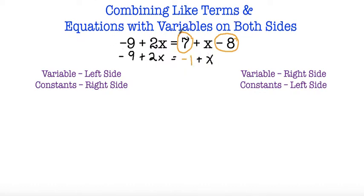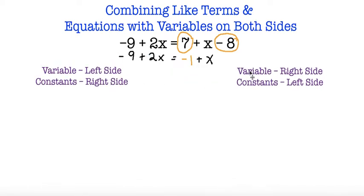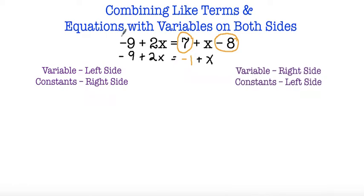After combining like terms it makes it a little bit easier to solve. I'm going to show you two methods. In the first method we're going to move all of our variables to the left side and constants to the right side. In the second method we're going to move all of our variables to the right side and all of our constants to the left side.